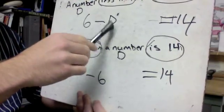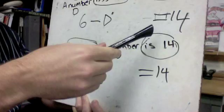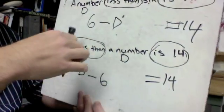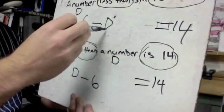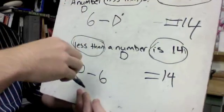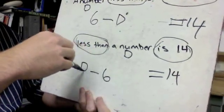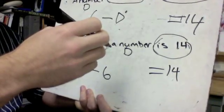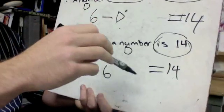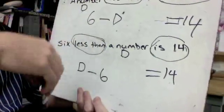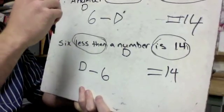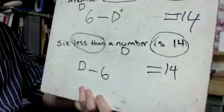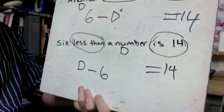Six minus whatever to get up to 14, we'll learn about next year in seventh grade that that's actually going to be negative eight would be your answer there. Down here, something minus six to get 14 is going to be like, what would that be? That would be 20, 20 minus six is 14. So the answers are a lot different. So make sure that you read through what it says to figure out which order these subtraction ones should go in.